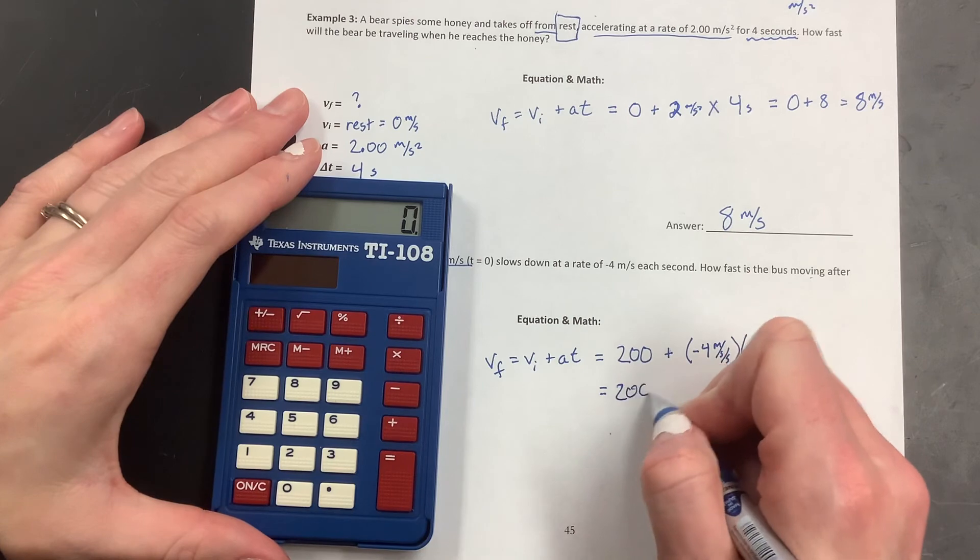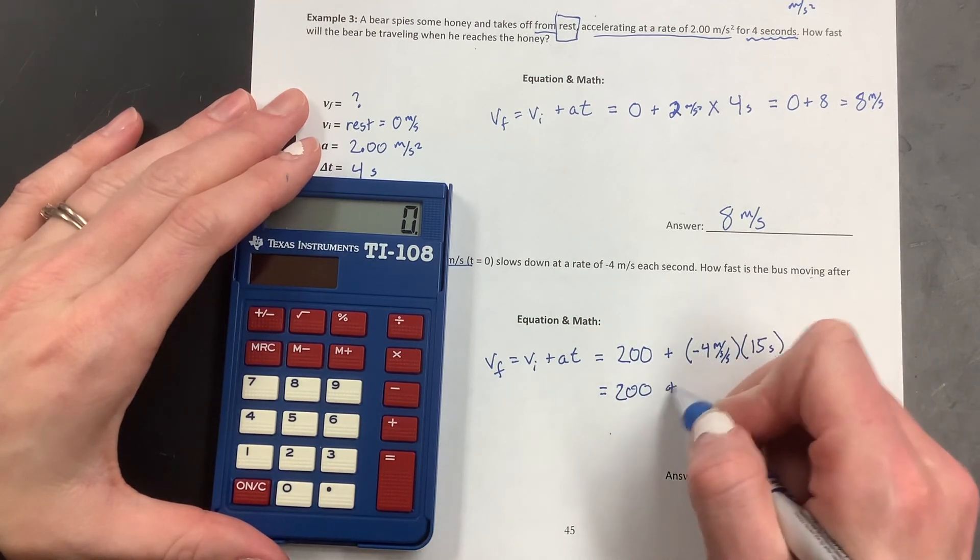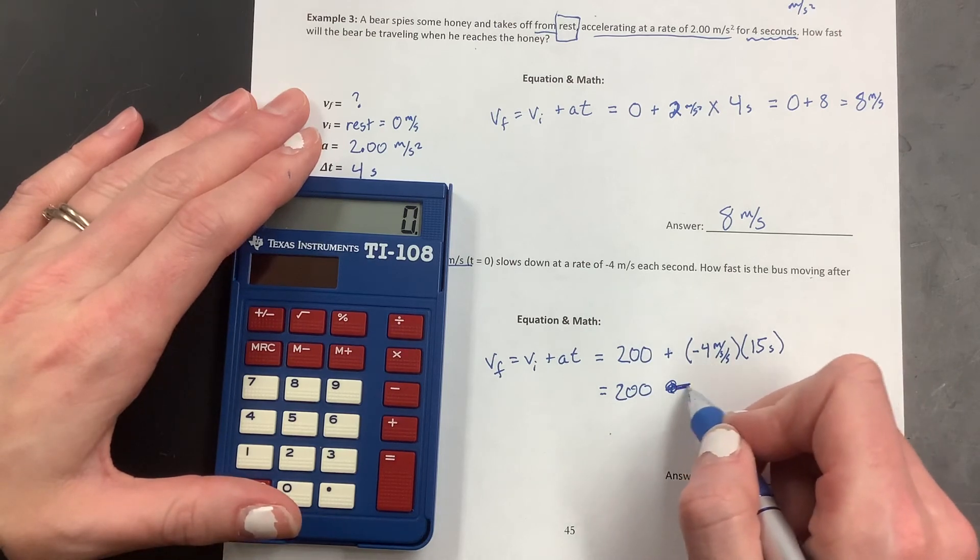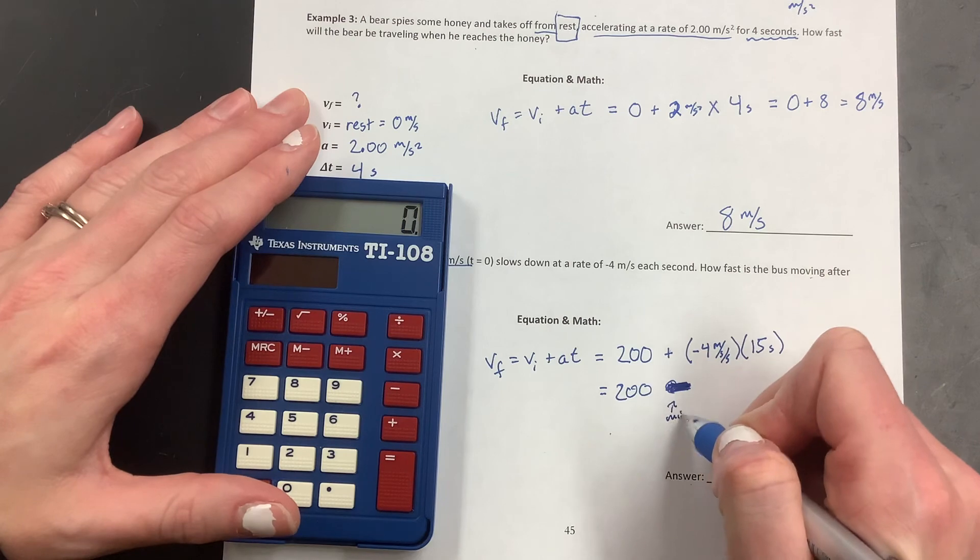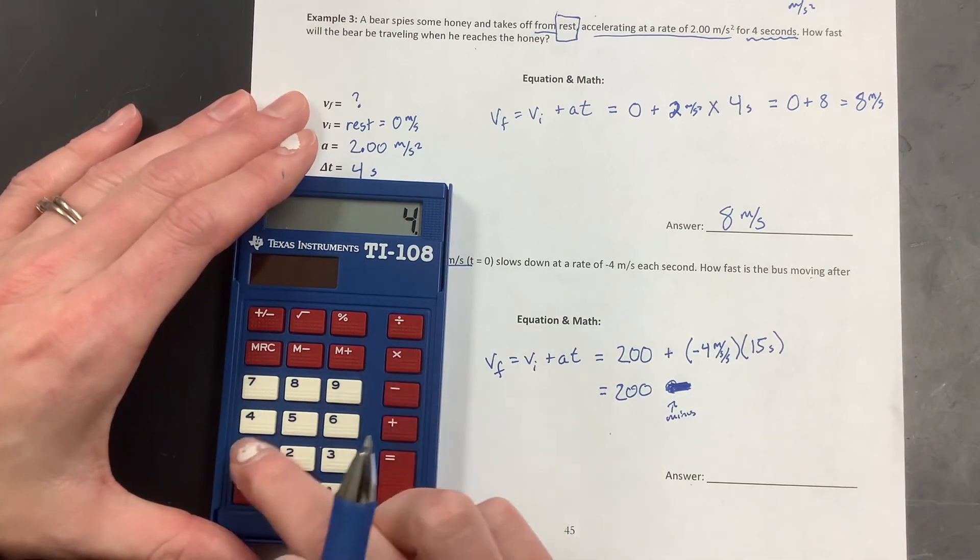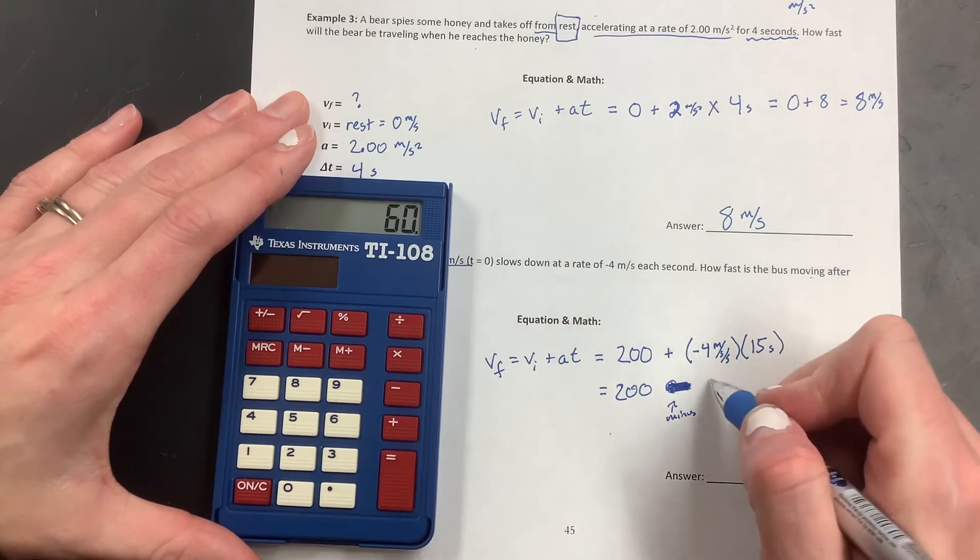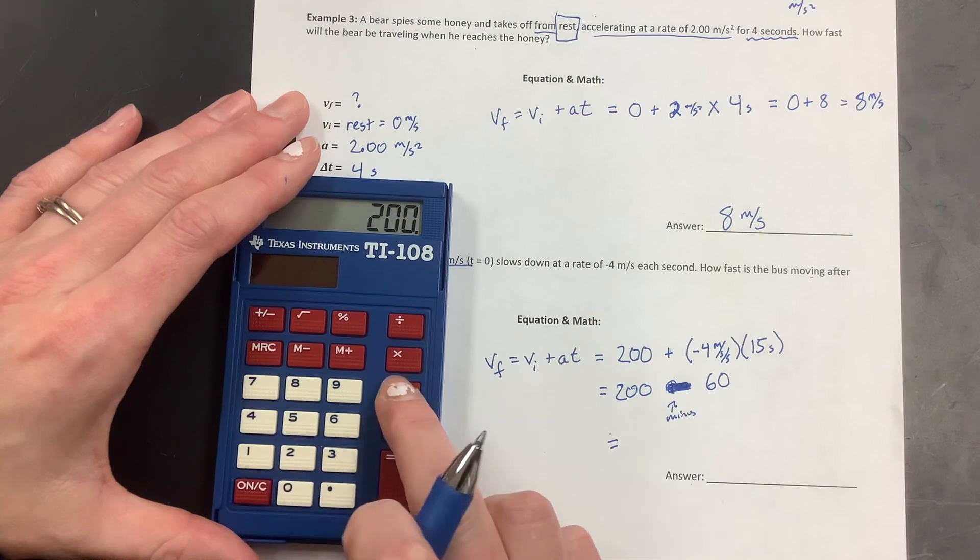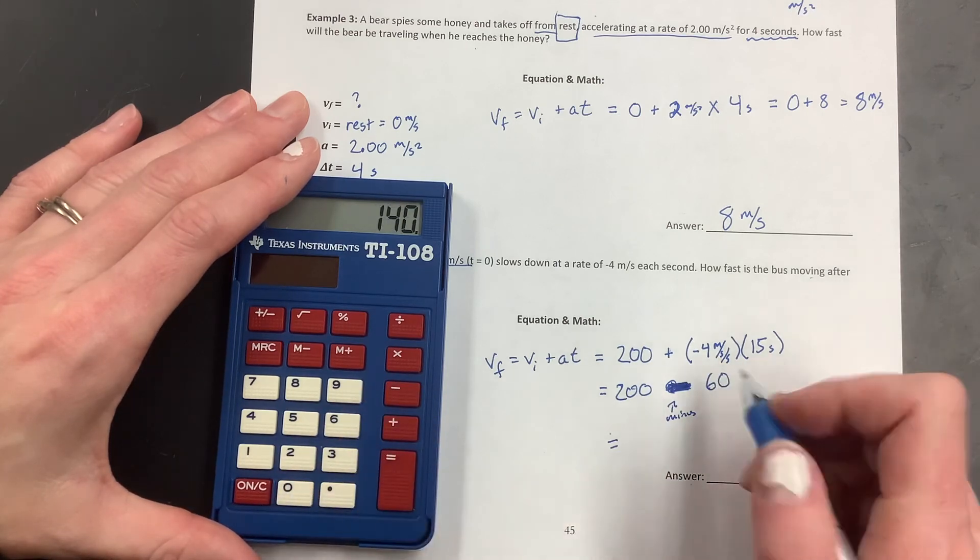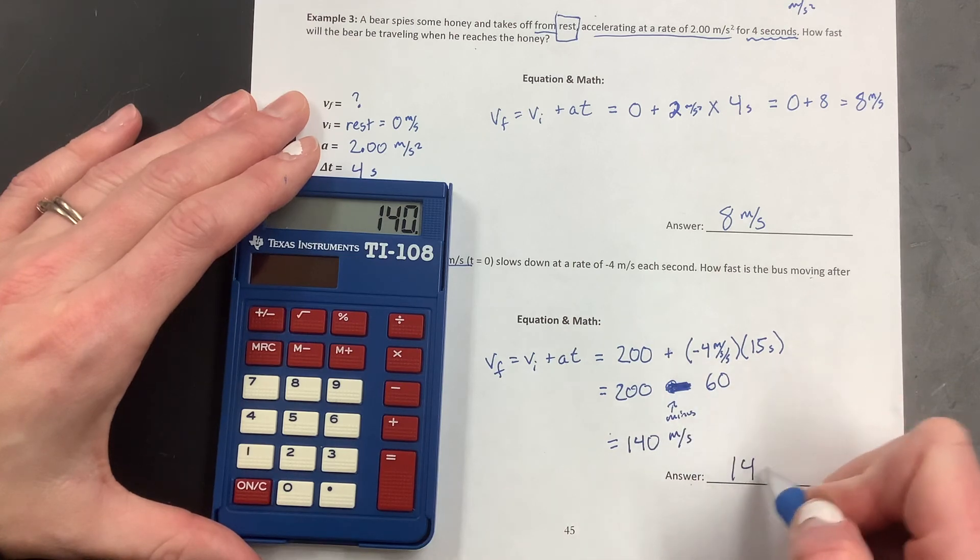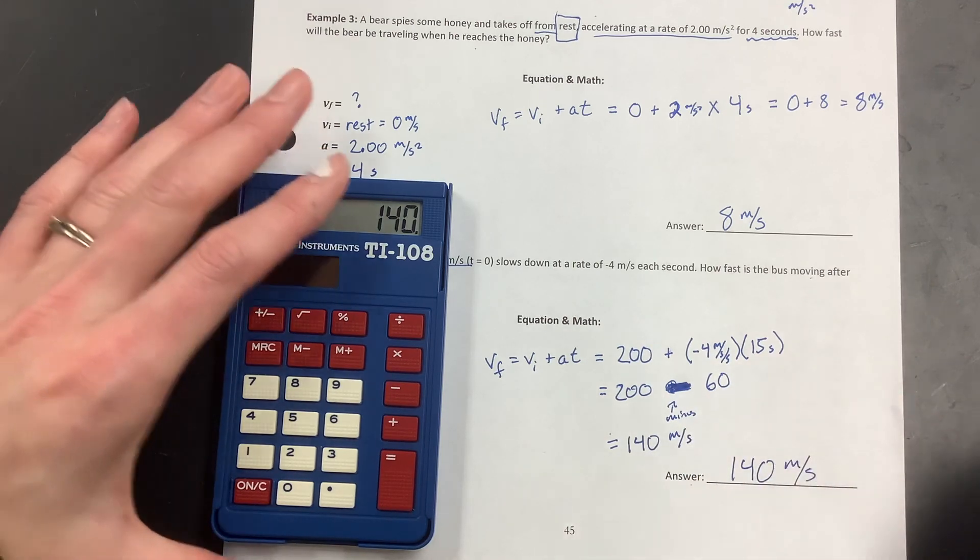So I'm going to leave the 200 there. Negative, when I have a negative number, that means I'm subtracting. So I'm just going to pull that negative out and make it this. This is going to be my giant negative. Minus. And then I'm just going to multiply those. So 4 times 15, and I get 60. So what I need to do, again, now I've got 200 minus 60, and I get 140 meters per second. So that's going to go here, 140 meters per second.